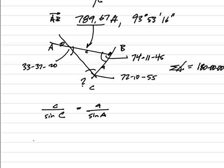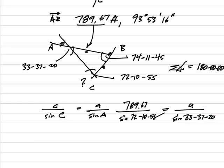So here we go. I'm going to do the math. It shows 789.67 over the sine of the angle at C. That's the sine of 72, 10, 55. That equals A over the sine of, let's see, that is going to be big A, right? 33, 37, 20. Okay. Well, if I solve for A, I will get 459.28. That is the distance from B to C.